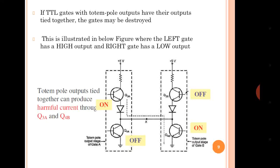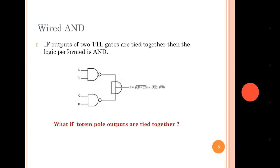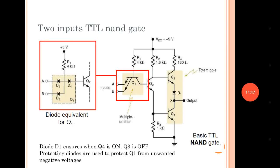Two more points: unconnected inputs — inputs which are not connected to anything — will act as logic 1 in the case of TTL, because they are equivalent to diodes D2 and D3 being open circuits. One more thing: we can connect two external diodes at terminal A to ground and at terminal B to ground to protect the transistor from unwanted negative voltages. These diodes are called protective diodes.